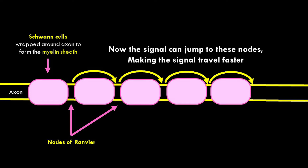It's possible to speed this process by attaching what's called the myelin sheath to the axon — specialized cells that wrap themselves like insulation on a wire around the axon. This creates places called nodes of Ranvier between those cells where the action potentials fire, so they don't have to fire in the places covered by the sheath. In general, this makes signal transmission faster.